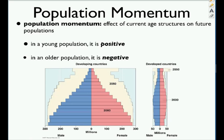Population momentum is the effect of current age structures on future populations. Even if a country with lots of young children reduces its birth rate, all those existing children will still grow to adulthood and reproduce — that wide base marches upward. In an older population, momentum works in the other direction, causing population to shrink over time.